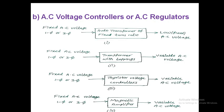The second type of converter is AC voltage controllers or AC regulators, which convert fixed AC voltage to variable AC voltage. For all these controllers the input is fixed AC voltage, single phase or three phase. The first type is an auto transformer of fixed turns ratio; by adjusting the tappings or turns ratio you get different voltages — for example with a 230V single phase input, output ranges from 0 to 230V.